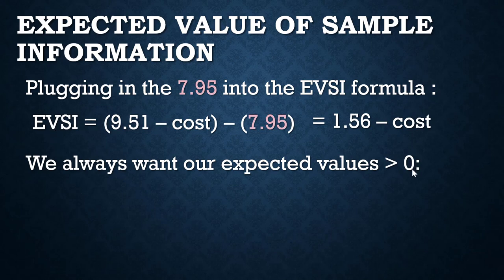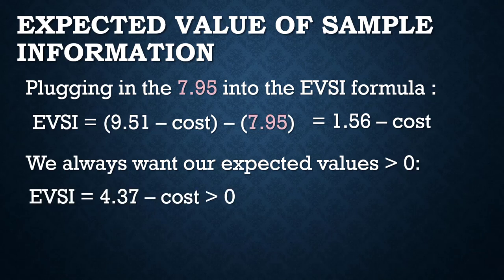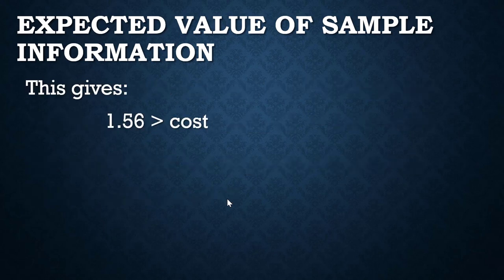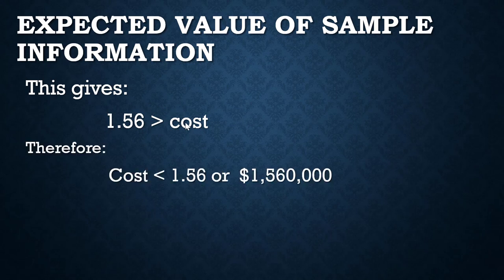We always want our expected values to be higher than zero — we want to expect to be making money. So in this case, 1.56 minus the cost must be greater than zero, meaning the cost must be less than 1.56. That cost is the cost of your forecaster.